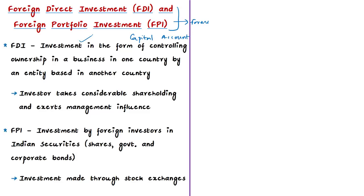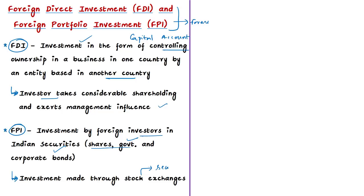Foreign Direct Investment (FDI) is an investment in the form of a controlling ownership in a business in one country by an entity based in another country. In FDI, the investor gets both ownership and control of the firm. On the other hand, Foreign Portfolio Investment (FPI) is the investment made by foreign investors in Indian securities, including shares and government and corporate bonds, made through stock exchanges — that is, through secondary markets.